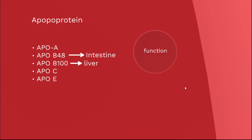There are five types of apoproteins: Apo A, Apo B48, Apo B100, Apo C, and Apo E. Different lipoproteins have different types of apoproteins in them. Apo B48 and Apo B100 both share the Apo B gene, but the difference is that Apo B100, which is produced in the liver, has the B gene 100% coded, whereas Apo B48, which is produced in the intestine, has the B gene only 48% coded — that is the reason they differ from each other.